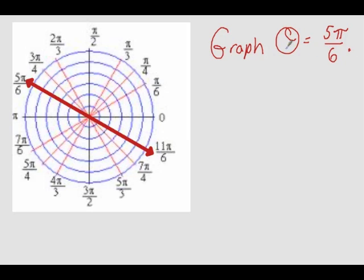So once again, graphing θ = 5π/6 and the radius will result in a line that extends forever in both directions. Well, I hope that helps you understand a little bit more how to plot points on the polar coordinate system, as well as graph some nice simple graphs. Thanks for watching.